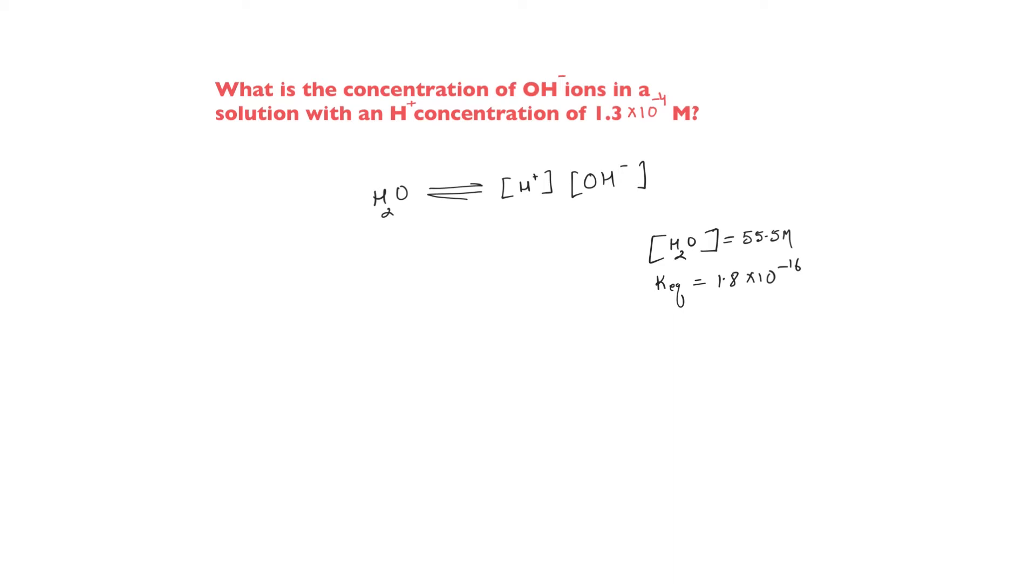The problem given to us is: what is the concentration of OH minus ions in a solution with H plus concentration of 1.3 into 10 to the power minus 4 molar?